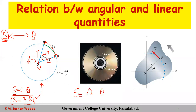We can relate linear distance to angular distance — linear displacement to angular displacement. That is why the equation s = rθ is very important. If there is any change in linear displacement, it will be reflected in the angular displacement: delta s = r delta theta. The angular quantity theta will always be in radians, not in degrees.